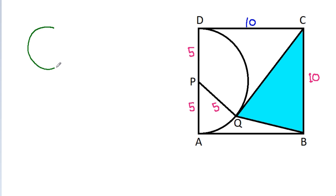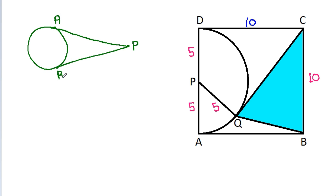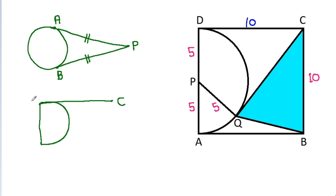On any circle, if we draw two tangents from a point P to points A and B on the circle, then PA equals PB. Here, we have a semicircle, and from point C, CD is a tangent and CQ is also a tangent. So CD equals CQ, and since CD is 10, CQ is also 10.